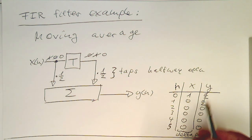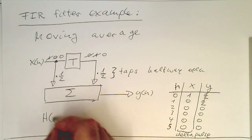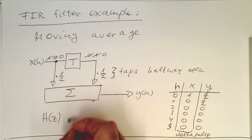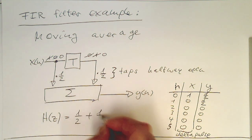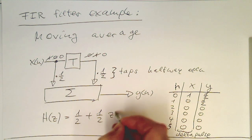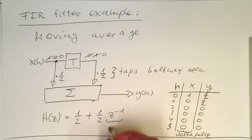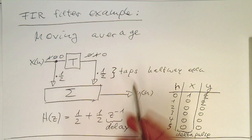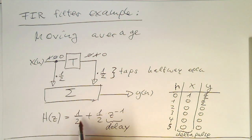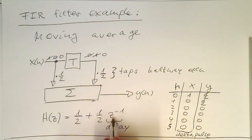We can directly write this down in our z-transform, because we know that z to the minus 1 is a delay. So we can write H(z) = 0.5·z⁻¹ for the delayed tap, and since the undelayed tap is z to the 0, that's just 1 — so it's simply the half. This gives us our transfer function: H(z) = 0.5 + 0.5·z⁻¹.